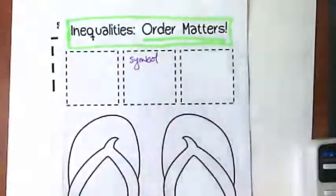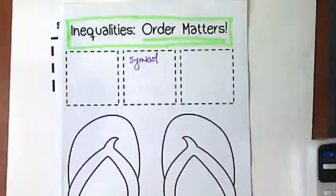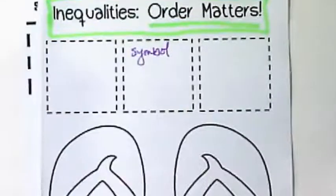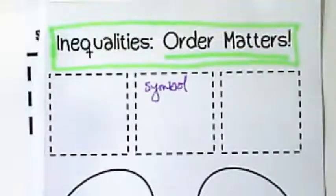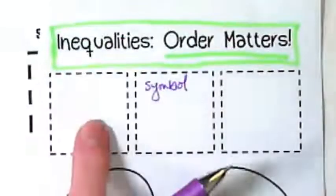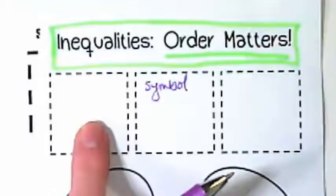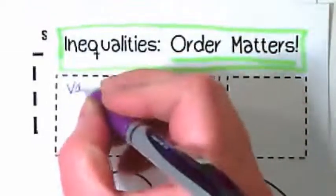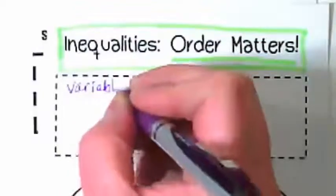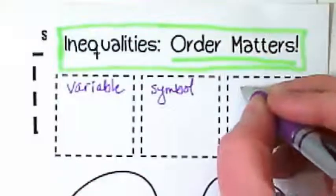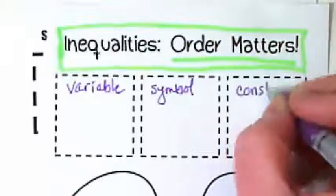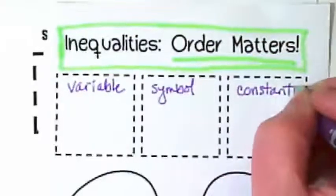When I say order matters, this has to do with when we're graphing it. It's important that we have what on the left side? The variable on the left, and on the right side, the number, or the fancy term is the constant.